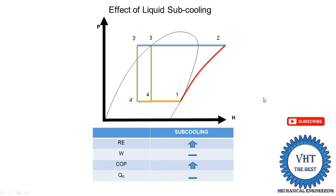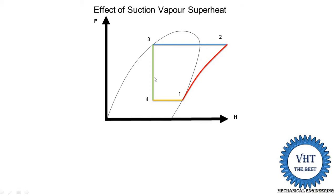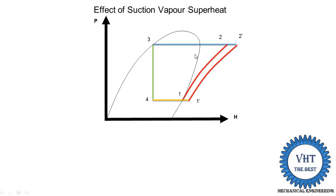The next factor is suction superheat. Suction superheat means the suction at the inlet of the compressor is done at a temperature above the saturated temperature. Point number 1 is the inlet of the compressor, and here saturated vapor is supplied. Now we modify this so that the vapor is superheated — point 1 moves into the superheated region, becoming point 1-dash. From this 1-dash point, we perform compression along a new compression line to point 2-dash, and the amount of heat rejection in the condenser is increased.